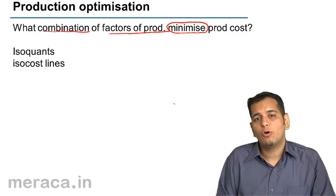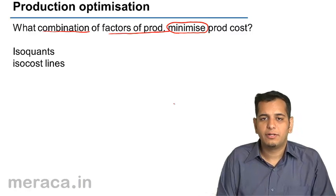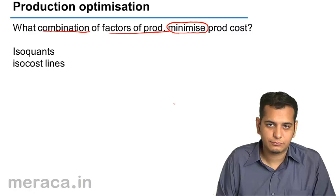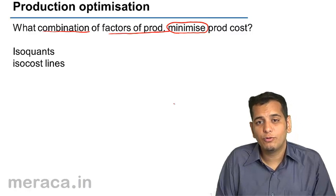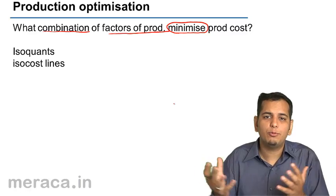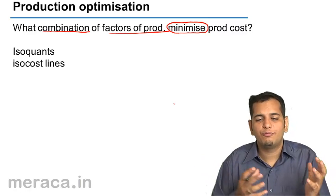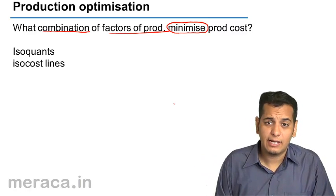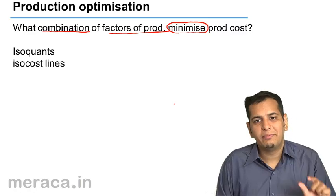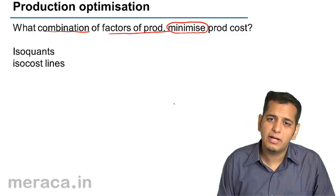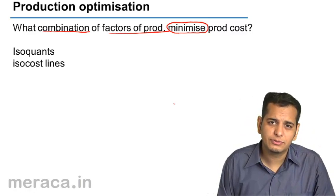Let's say I want to produce 100 units. What is the proportion of factors of production that I need to employ to minimize my cost of production?